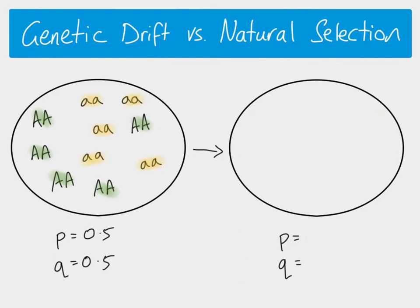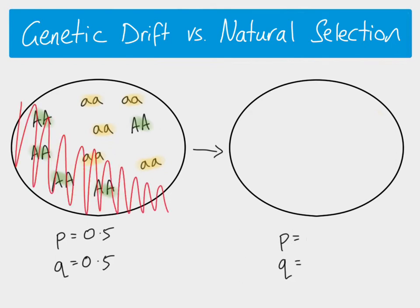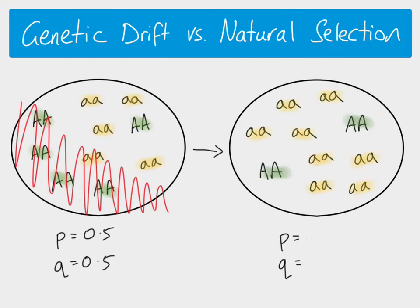Genetic drift occurs when a random event kills off a proportion of the population randomly. That could be some sort of natural disaster — maybe a fire, maybe an earthquake. Those individuals are not able to reproduce and pass on their alleles. In this simplified version, we now have more homozygous recessive individuals as a proportion compared to the original population. If these survivors are able to reproduce over several generations, we could see a change in allele frequencies — possibly a decrease in the dominant allele frequency and an increase in the recessive allele frequency — because of this initial random genetic drift event, nothing to do with selection pressure.